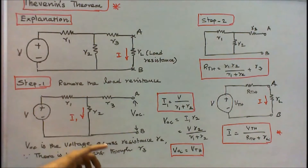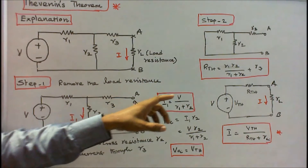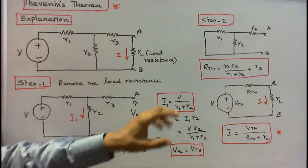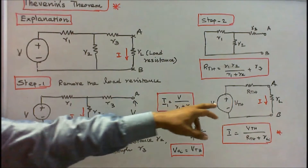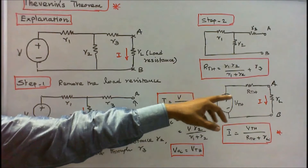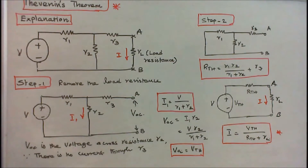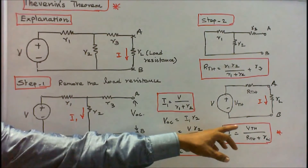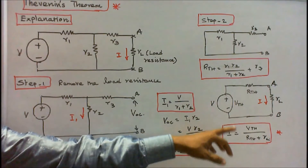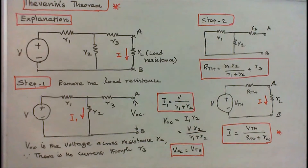Now knowing both Thevenin's voltage and Thevenin's resistance, I can easily find the load current I. The Thevenin's equivalent circuit has VThevenin in series with RThevenin, and the load resistance is connected across points A and B. The load current I equals VThevenin divided by the total resistance RThevenin plus RL. This completes the explanation of Thevenin's theorem.